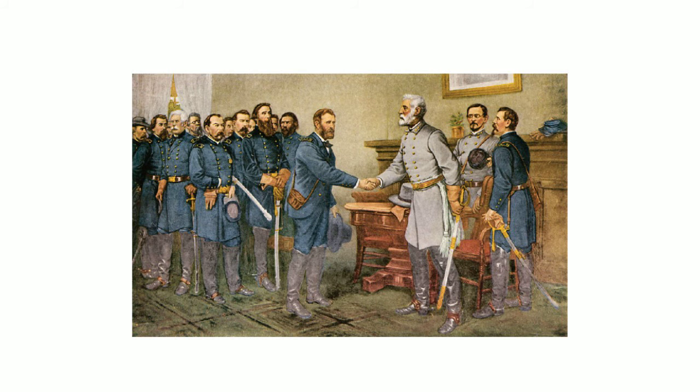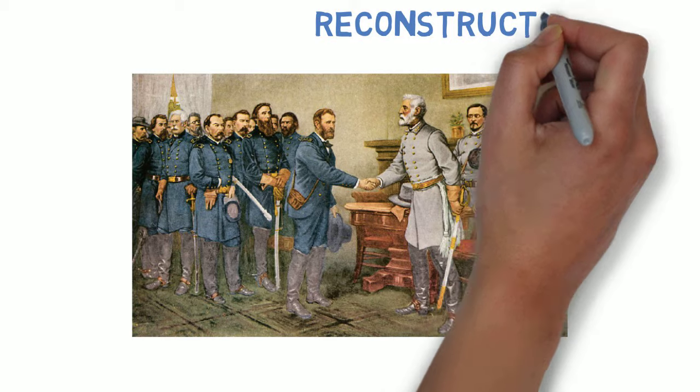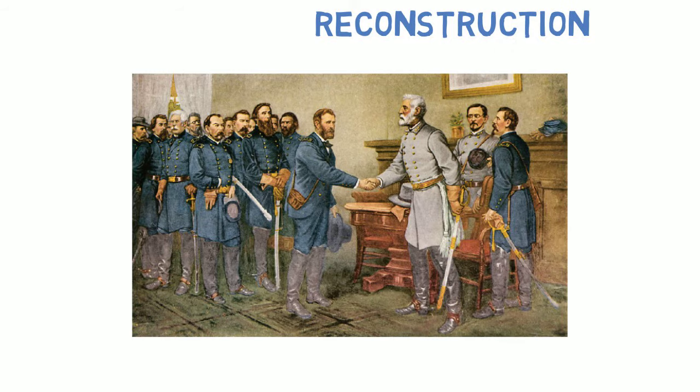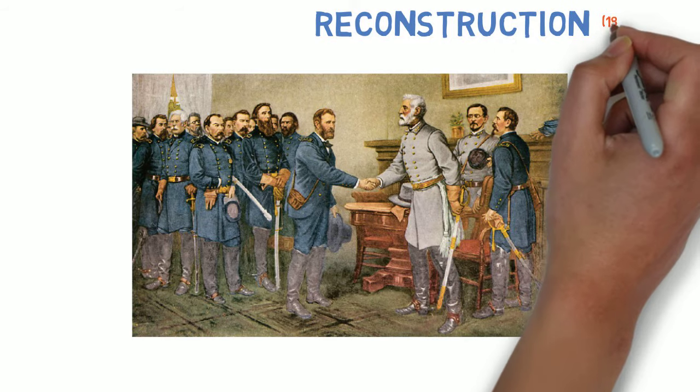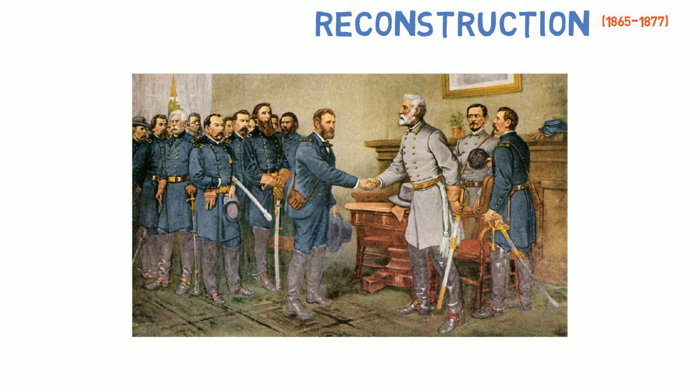The task of rebuilding the nation, especially the South, was now underway. The period after the Civil War, called Reconstruction, lasted from 1865 to 1877. It was an era of great controversy and competing ideas about what to do with the South, under what circumstances former Confederates would be allowed back into the Union, and what to do with nearly 4 million former slaves.